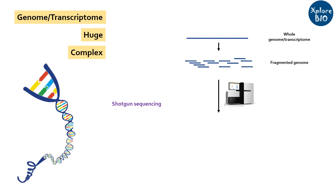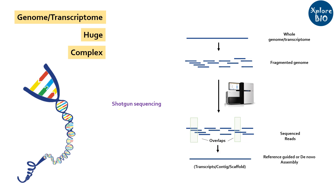After the sequencing is completed, these short fragments — which are called reads — are aligned and assembled based on overlapping regions to form larger fragments, which is the reflection of the entire genome or transcriptome.